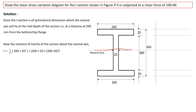Now we have to evaluate the moment of inertia of the section with respect to the neutral axis. We divide the section into three parts: top flange, web, and bottom flange. For the top flange, we use the formula BD³/12, which gives 200 × 20³/12, and apply the parallel axis theorem: I + Ad².